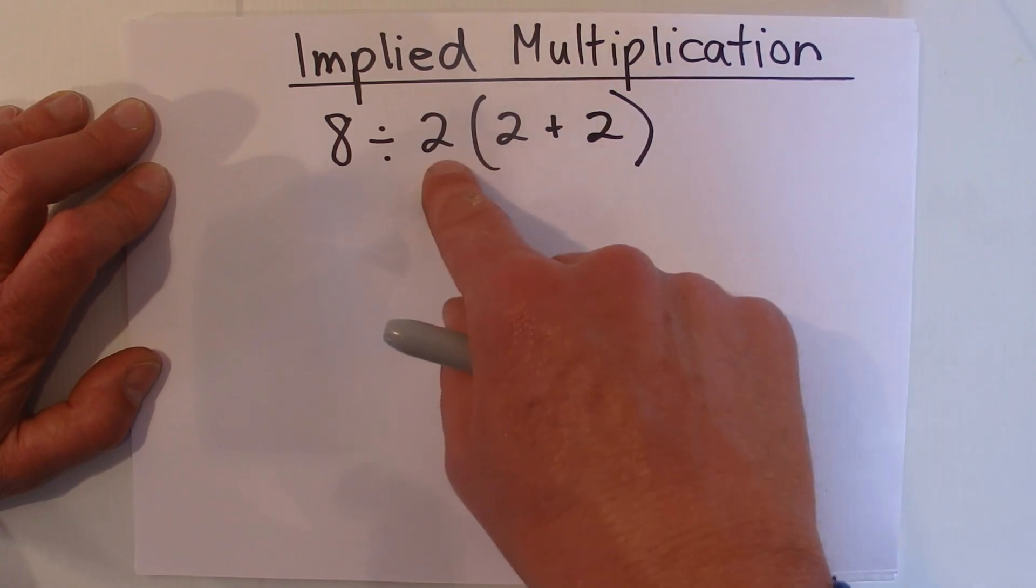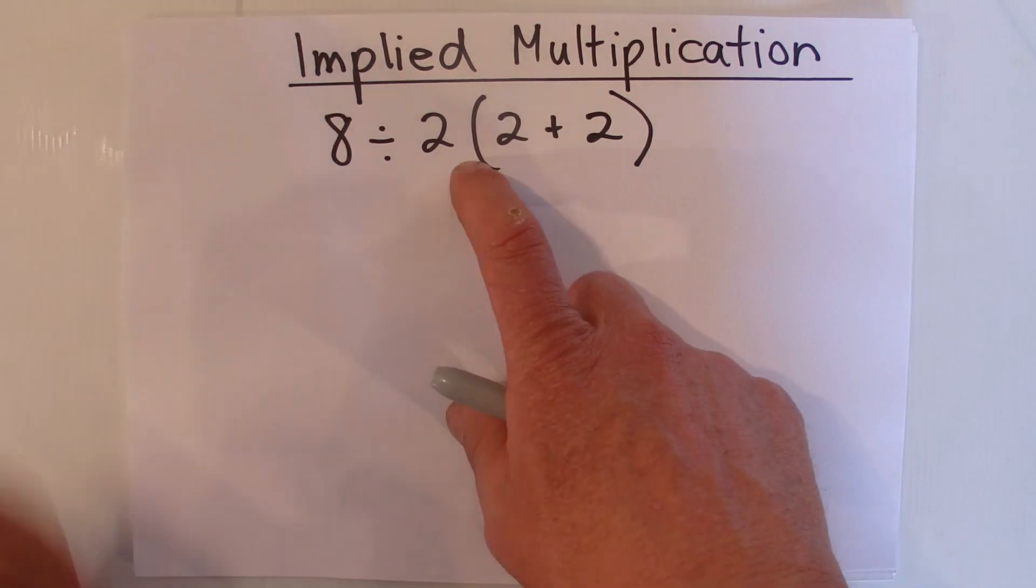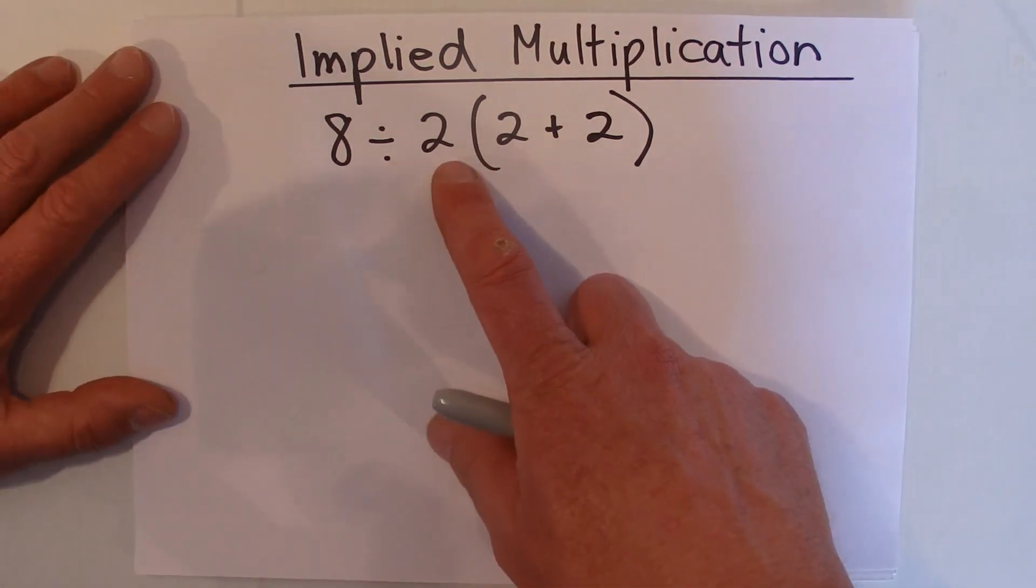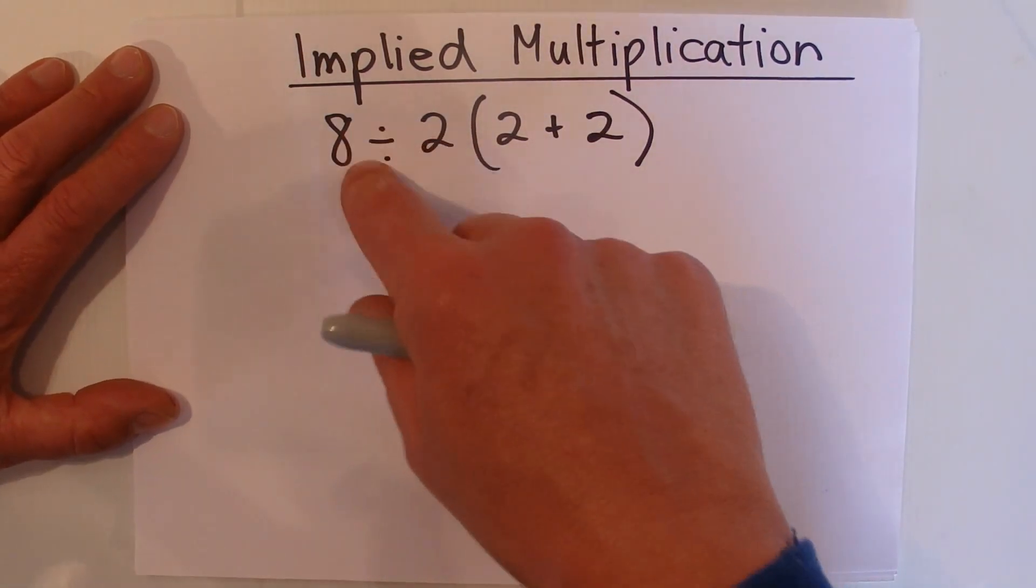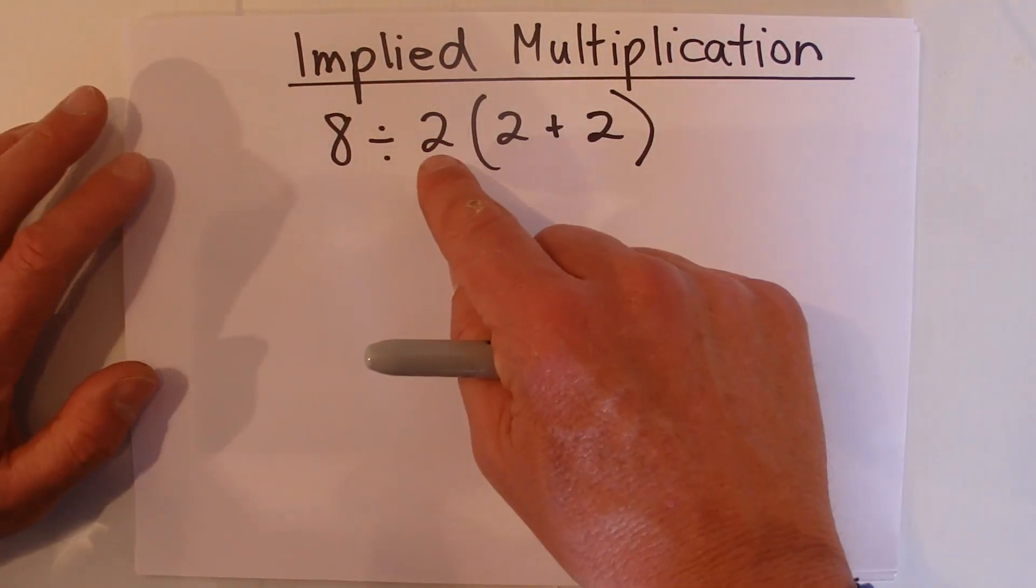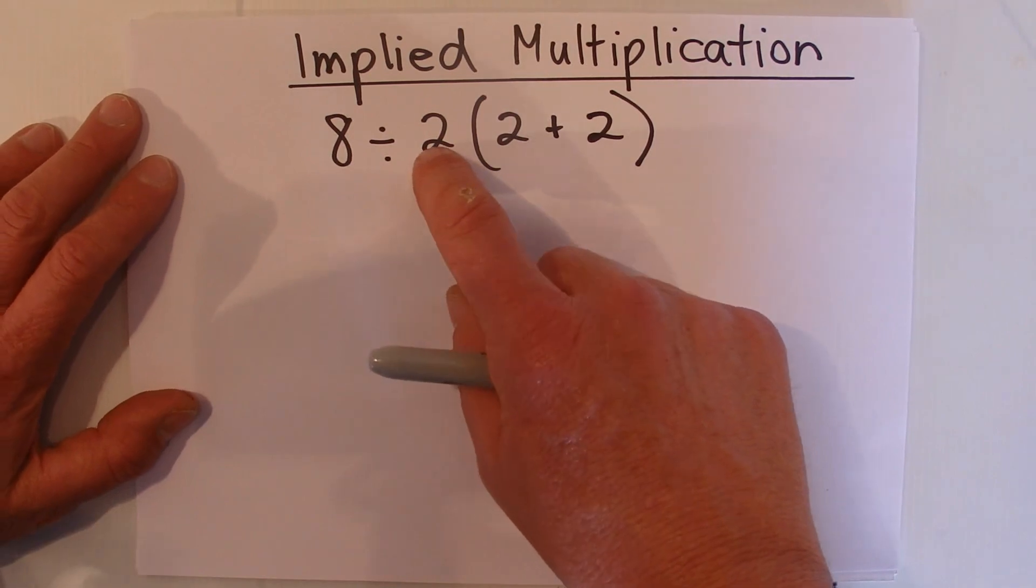It's called Implied Multiplication, which takes precedence over division. Where you've got Implied Multiplication in an equation, you need to do that part before the division. In this equation where...